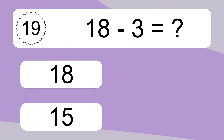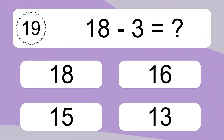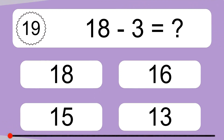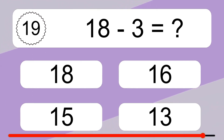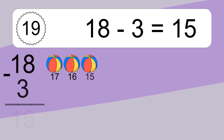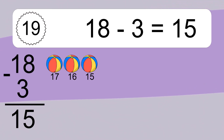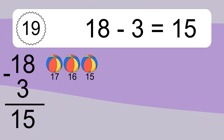18 minus 3 equals what? 18 minus 3 equals 15. Let's count it: 17, 16, 15.